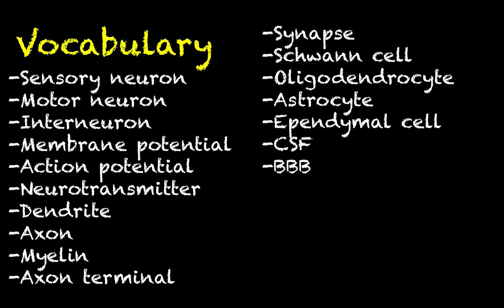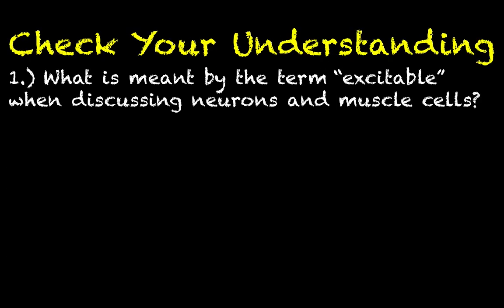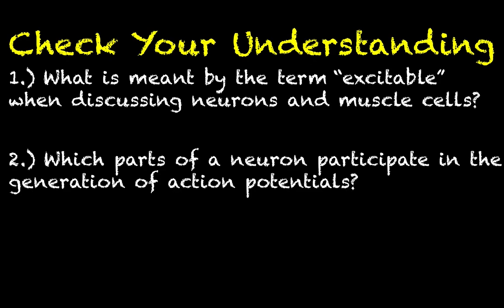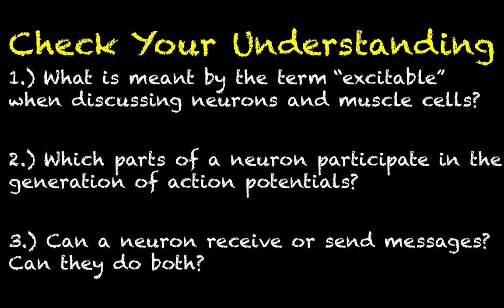That's going to do it for this video. Here is a list of vocabulary terms to check your understanding: number one, what is meant by the term 'excitable' when discussing neurons but also muscle cells? Number two, which parts of a neuron participate in the generation of an action potential? And number three, can a neuron receive signals, send signals, or can they do both? If you have any questions, drop them in the comments section — I will see you next.